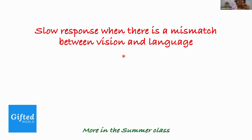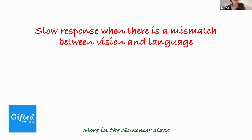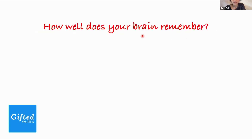There's research where a paragraph has the first and last letters of each word correct, but all the middle letters are scrambled — and you can still read it. This is another example where your brain projects what it knows onto the environment, filling in what it expects rather than processing what's actually there.